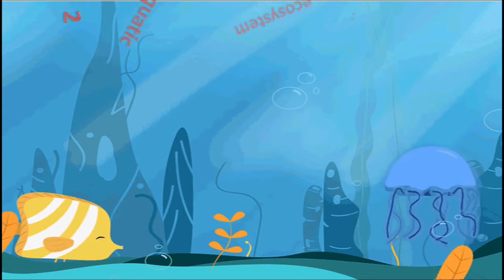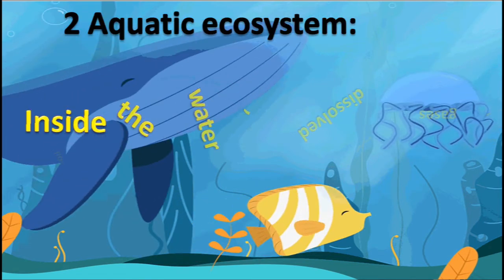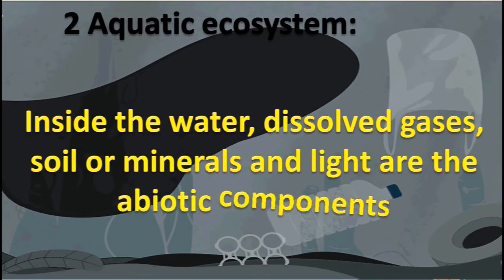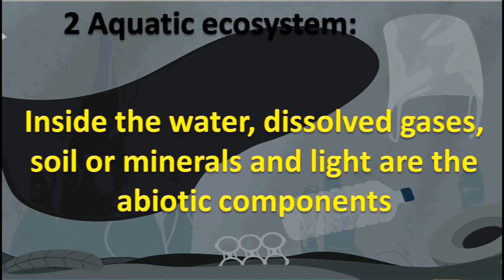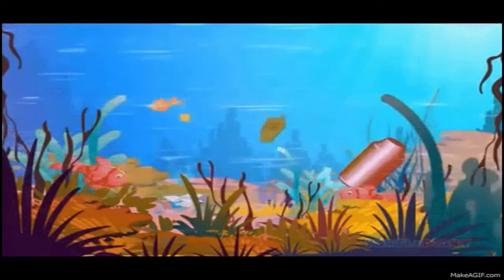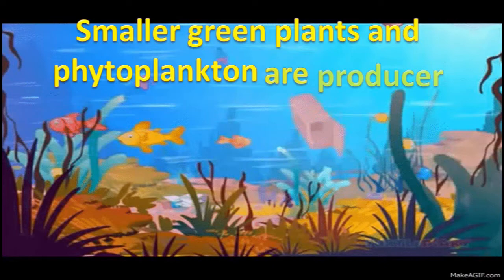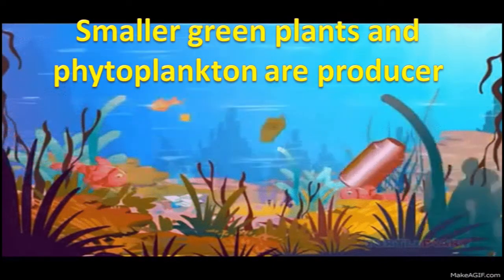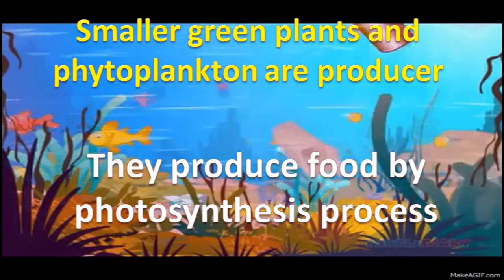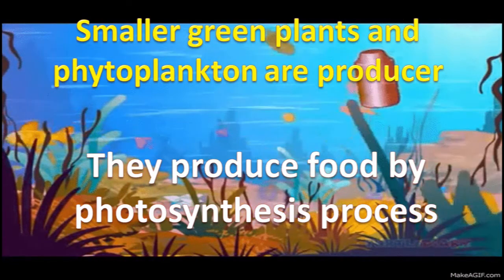The second type of ecosystem is the aquatic ecosystem. Inside the water, dissolved gases, soil, minerals, and light are abiotic components. Smaller green plants and phytoplankton are producers, and they produce food by photosynthesis using the abiotic components present inside the water.